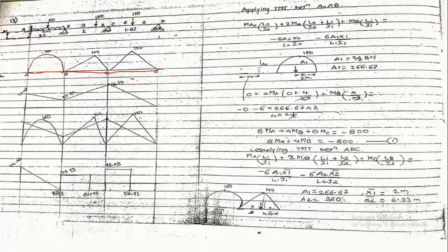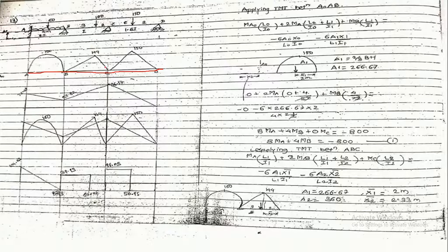For span AB with UDL, the bending moment is wL²/8, which equals 100 kN·m. We draw this as a second-degree curve. Span BC carries an eccentric point load of 120 kN, so the bending moment is WAB/L, giving a value of 144 kN·m — an unsymmetric triangle, first-degree curve. The third span carries a central point load of 150 kN, so the bending moment is WL/4 — with W = 150 and L = 4, giving 150 kN·m.